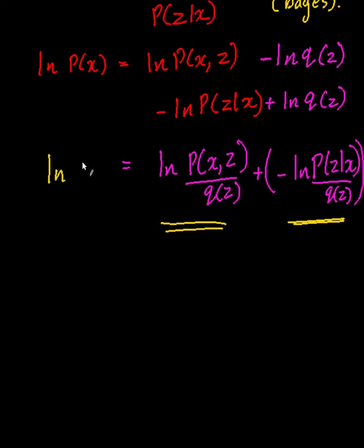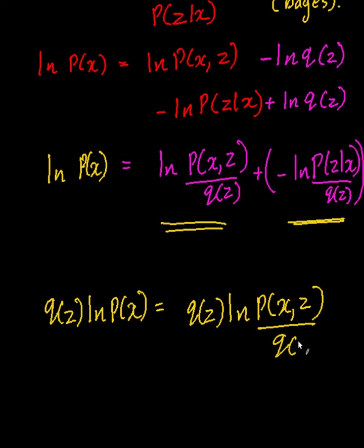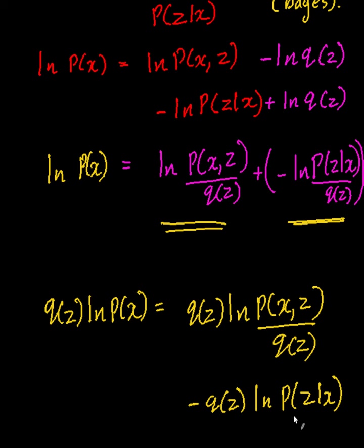So that was ln p(x). In order to integrate this, I'm actually going to multiply both sides by q(z). So ln p(x) equals q(z) times ln of the joint probability divided by q(z), minus q(z) times ln of p(z|x) — the conditional probability of the hidden variable — divided by q(z). So I've just multiplied both sides by q(z).